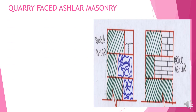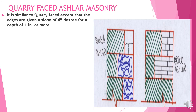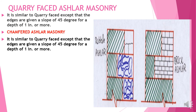Quarry faced Aslar masonry: the face of the stone is left as it comes from the quarry. Chamfered Aslar masonry is similar to quarry faced except that the edges are given a slope of 45 degrees for a depth of 1 inch or more. The image shows how these chamfers have been provided.